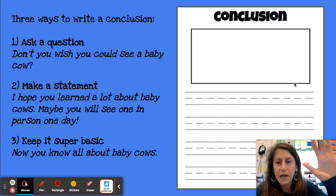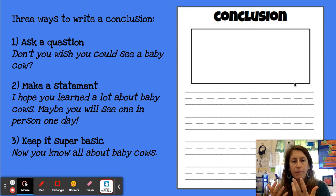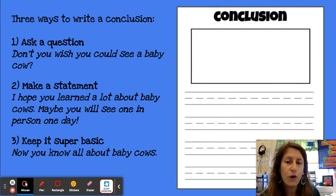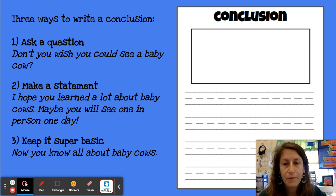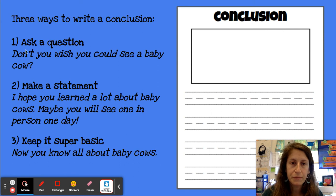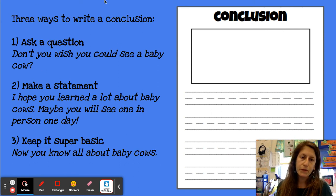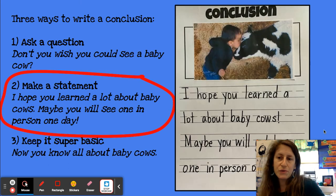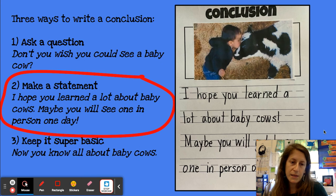For the conclusion, same idea — all you're doing is wrapping it up and reminding your reader what they just read about. You can ask a question: 'Don't you wish you could see a baby cow?' You can make a statement: 'I hope you learned a lot about baby cows. Maybe you will see one in person one day.' Or keep it super basic: 'Now you know all about baby cows.' You're familiar with all of this from your how-to books.